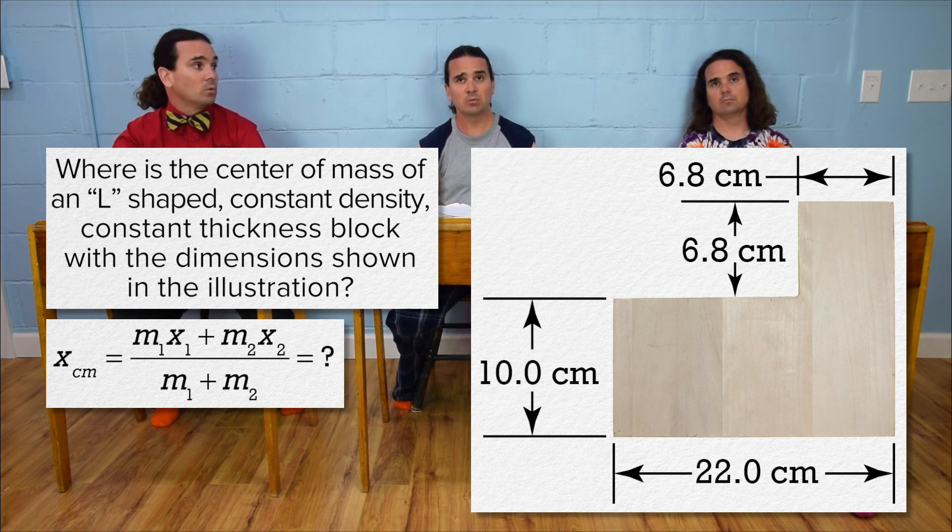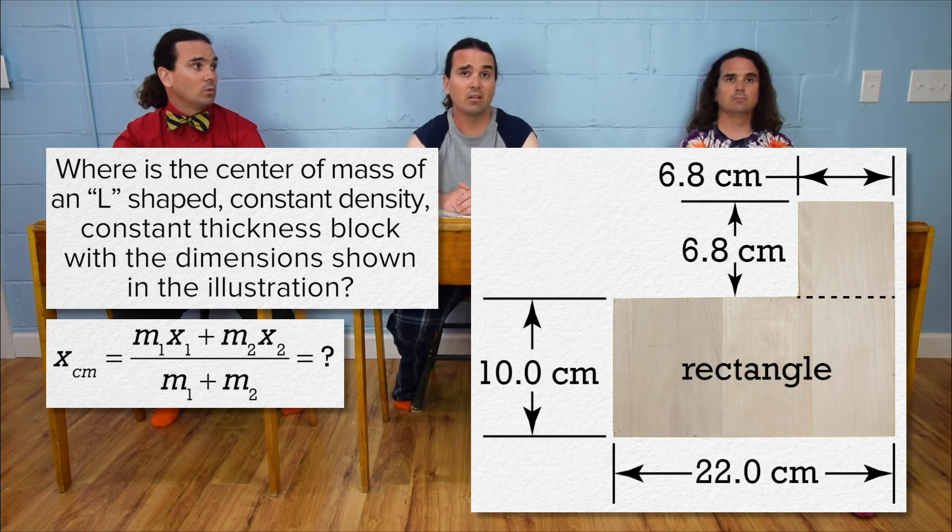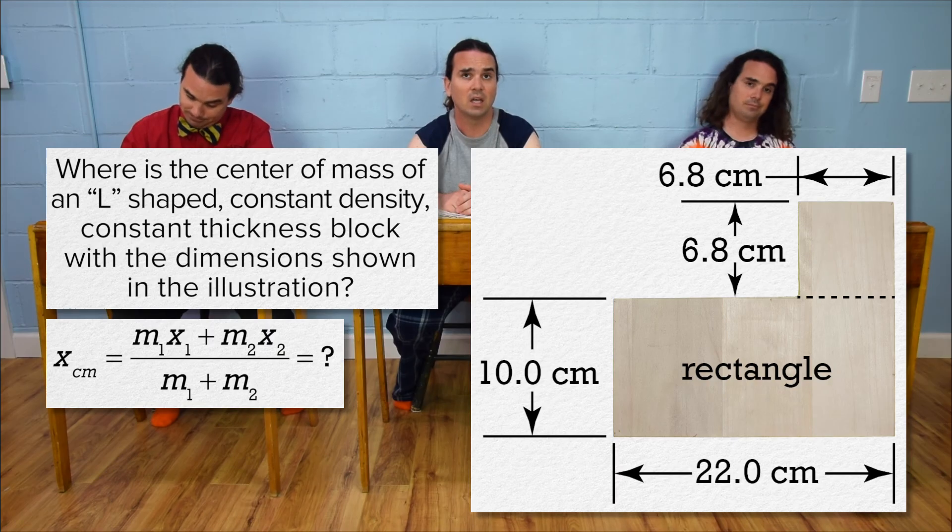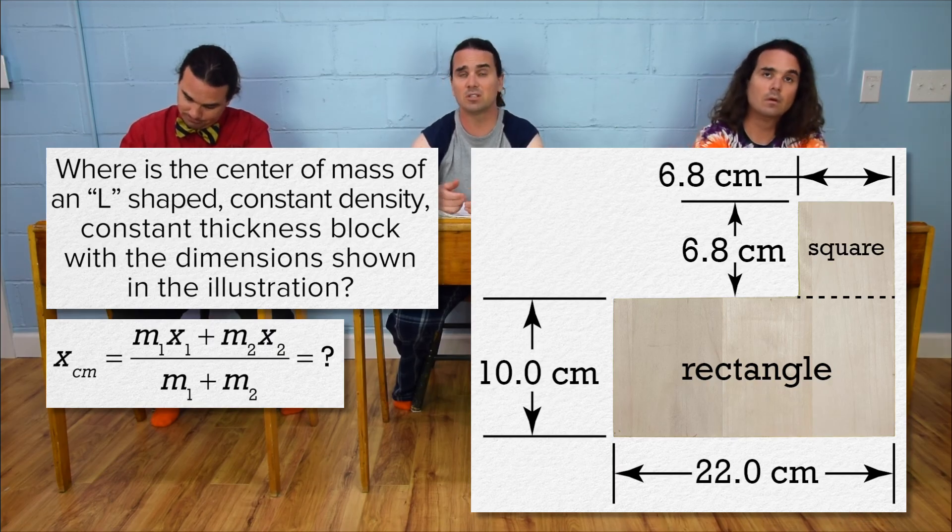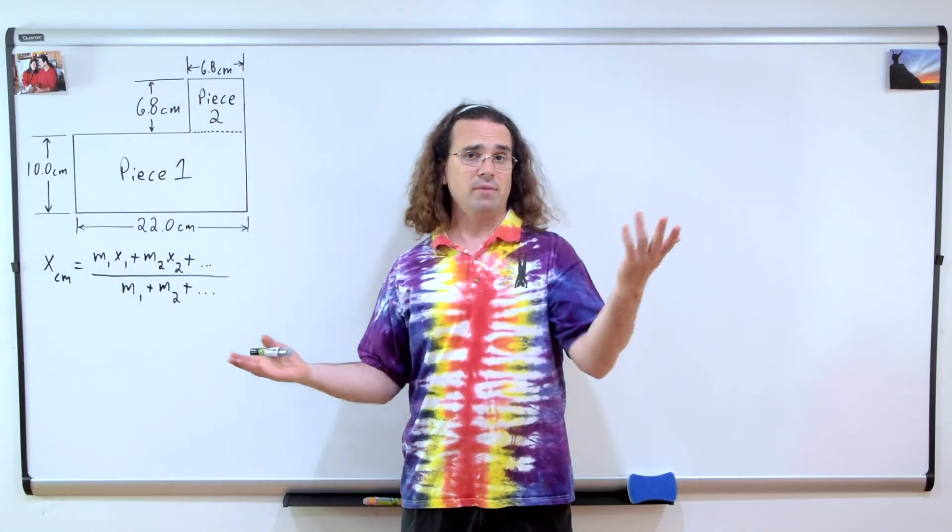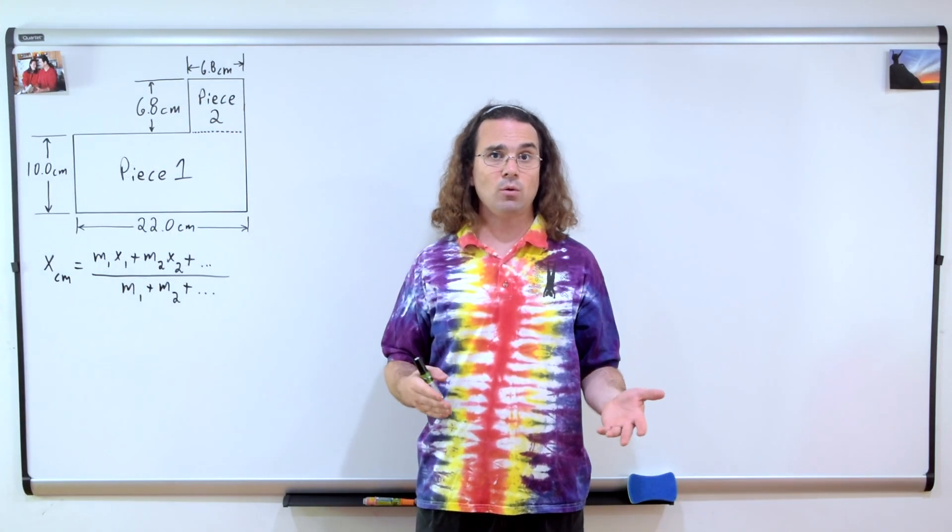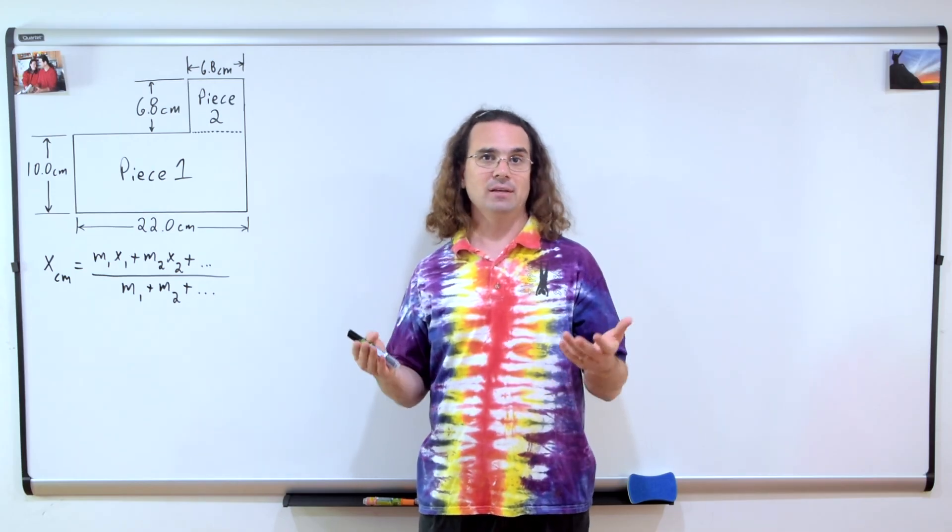Right, two pieces we could use would be the lower rectangle that is 22 centimeters long by 10 centimeters wide, and the square in the upper right, which is 6.8 by 6.8 centimeters. Sure, that will work, but do realize that any two or even more shapes that we pick will result in the same correct answer.